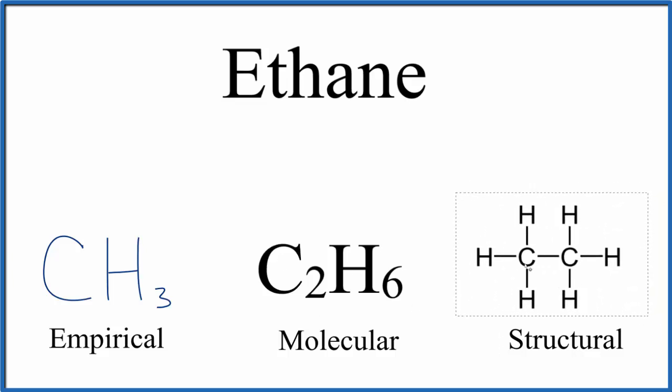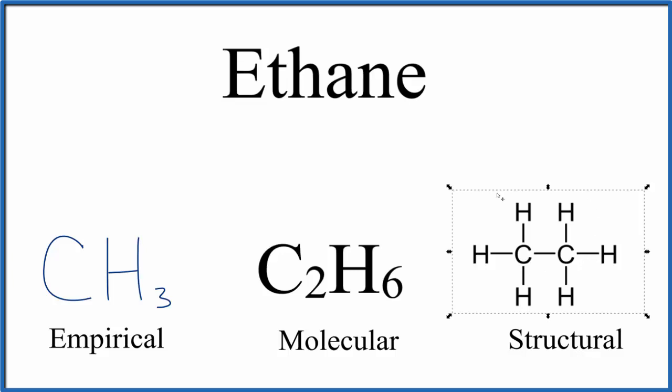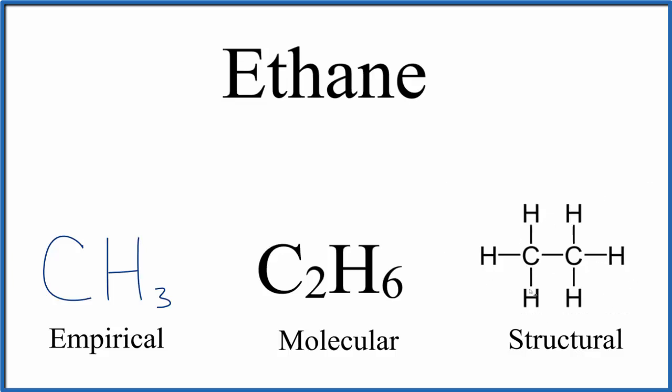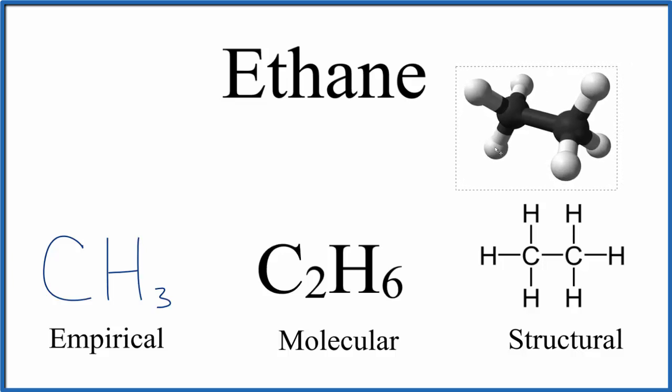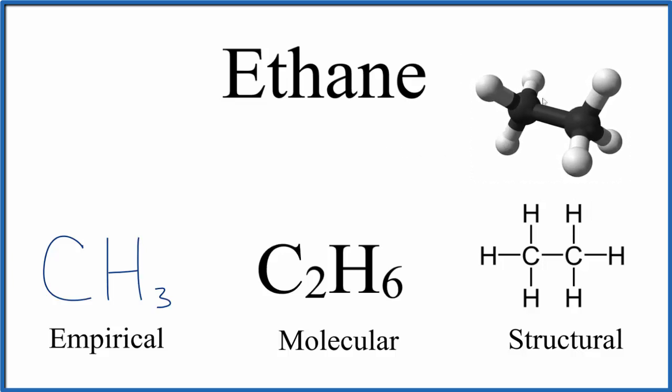So the structural formula for ethane, that's C2H6. But we can now see how they're arranged in relationship to each other. We could even go further and look at a molecular model based on our structural formula and see how they're arranged in three dimensions. The blacks are the carbon. The whites, those are the hydrogens.